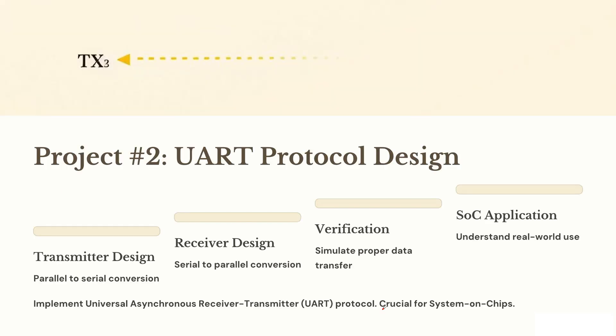Once you're done with that, start learning UART protocol — the Project 2. It's basically the WhatsApp of electronic serial communication. You will design the transmitter and receiver: one turns a message into binary, the other turns it back. And unlike WhatsApp, your UART won't double-tick you.